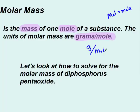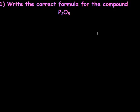Let's look at how to solve for the molar mass of diphosphorus pentaoxide. We're going to be following the steps that are on your paper, and you'll see this problem at the bottom of your page. So step one is you have to write a correct formula for the compound. It's super important that you can write a correct formula. If you mess up on the formula, everything else is going to be messed up. So diphosphorus pentaoxide is two P's and five oxygens.